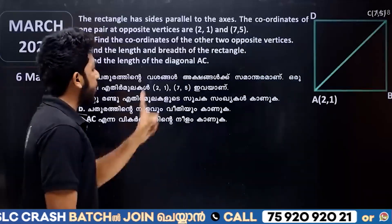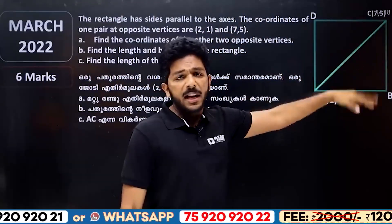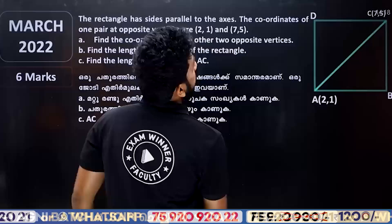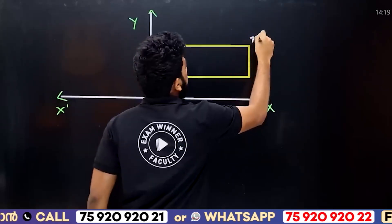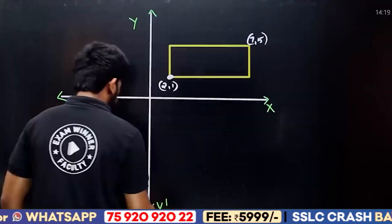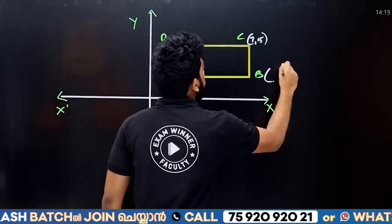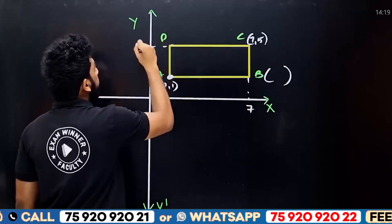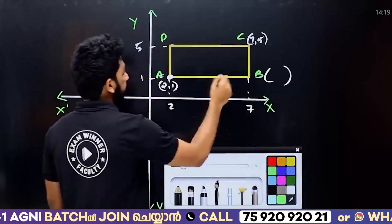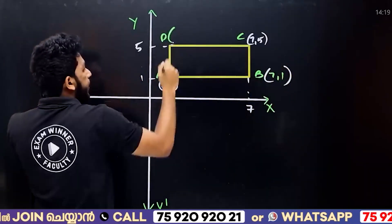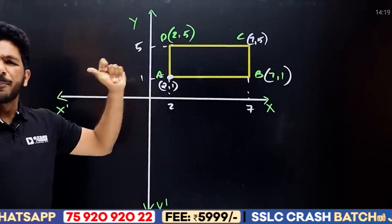Now a practice question for the final exam. A rectangle has sides parallel to the x and y axes. The given coordinates are A=(2,1) and C=(7,5). Find the coordinates of B and D. The answer: B=(7,1) and D=(2,5). This is straightforward using the same method.